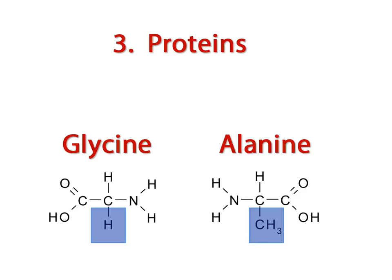There are 20 different amino acids, so there are 20 different R groups. But all 20 amino acids have this general skeletal structure.